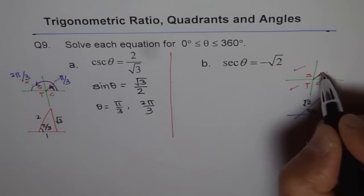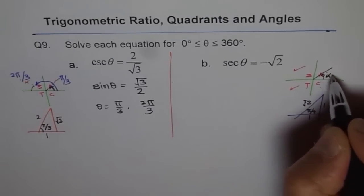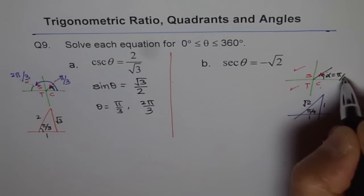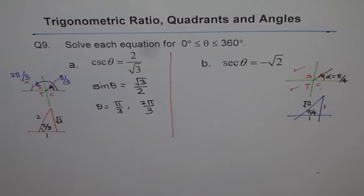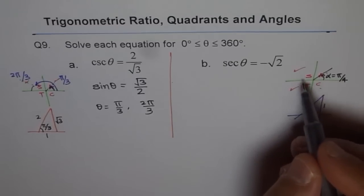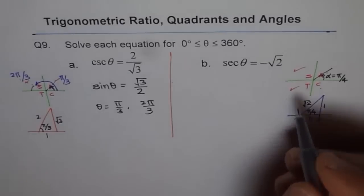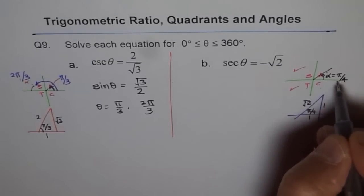Therefore, our related acute angle, let me say alpha, is equal to pi by 4. And the two solutions which we are looking for are actually in quadrant 2 and 3 with acute angle of pi by 4.